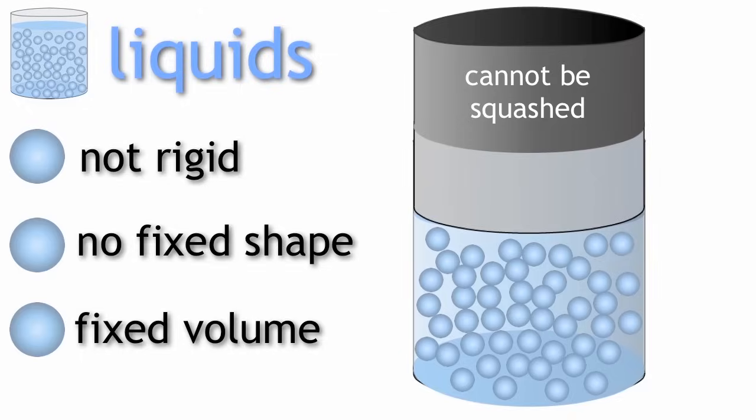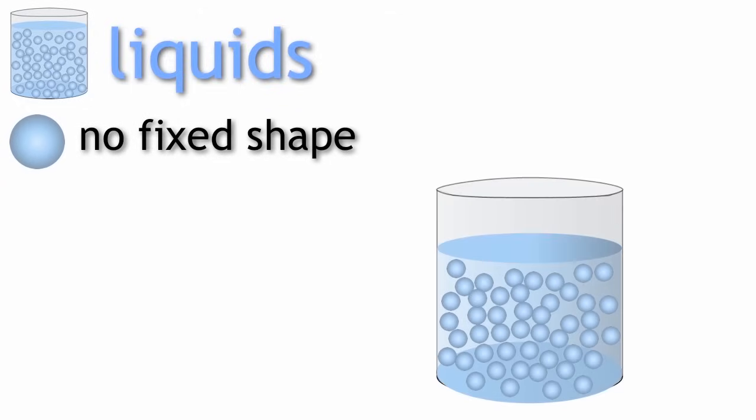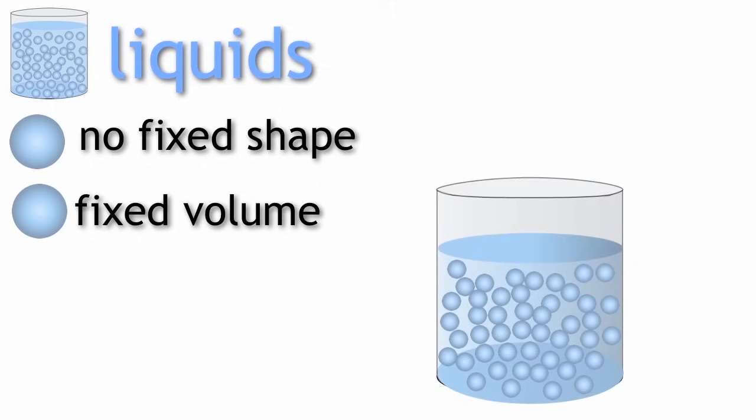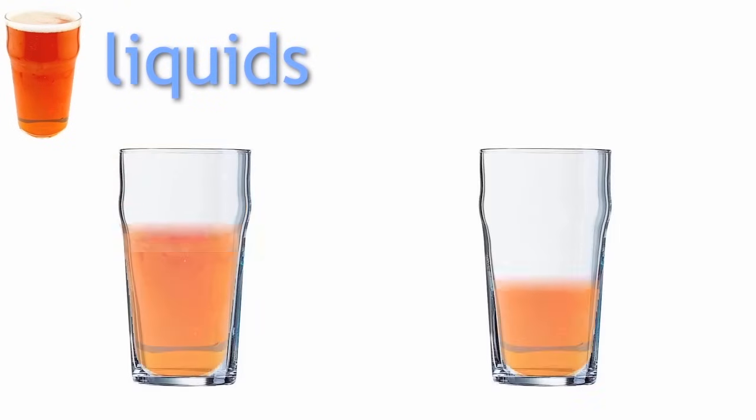Beware with that one, as many students think because liquids do not have a fixed shape, they do not have a fixed volume either. But they are wrong. If someone orders a pint of beer, they cannot make it two pints by pouring it into different containers. As you know, liquids can flow.